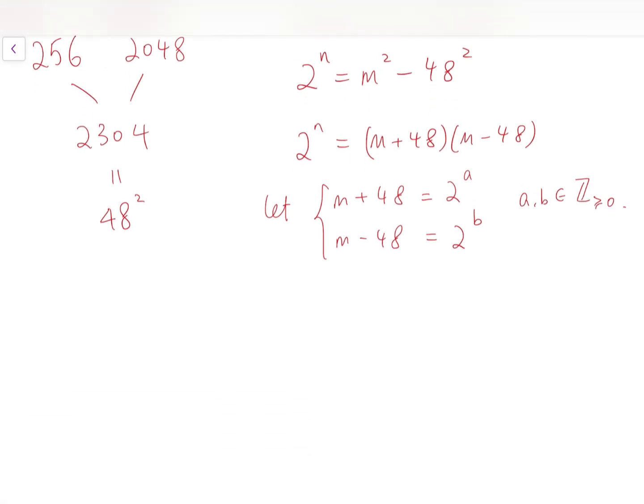Now from this, we can first solve for a and b, because by taking the difference of these two equations, we have 2^a - 2^b = 96. Of course, here we are assuming that b is smaller than a.